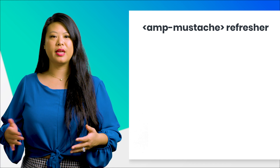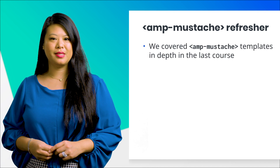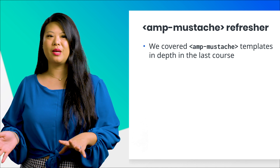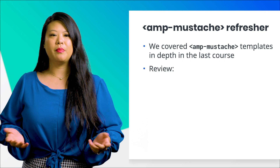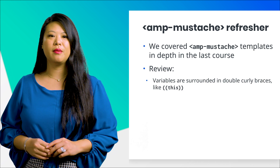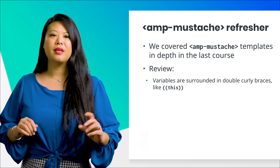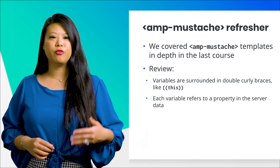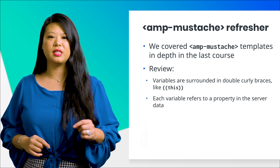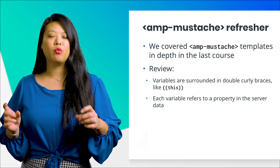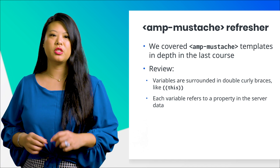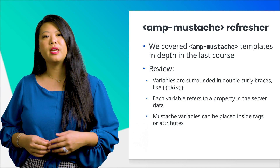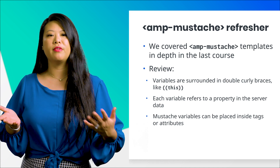The templates we'll be using with the AMP list are the AMP mustache templates. We covered AMP mustache templates in the intermediate course, and we used them to display a confirmation message when the user signed up for our newsletter. So let's do a quick review. The variable names included in the mustache templates are surrounded by double curly braces. These variables are replaced by the data from the server before being displayed on the screen. The variables in a mustache template refer to the properties of each item in the list of data received from the server. For example, the mustache variable name refers to the name property of each object returned from the server. Mustache variables can appear as content inside of tags, such as the text of a paragraph tag, or they can appear inside of attributes, such as the source attribute of an AMP image component.